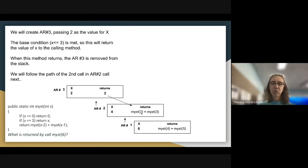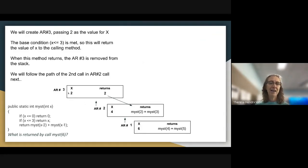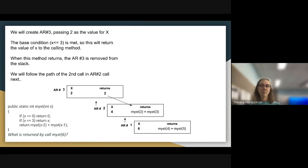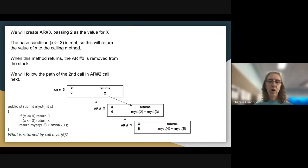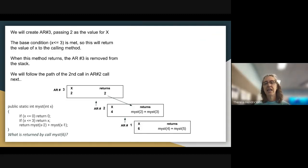When MIST(2) is called, it creates activation record 3, passing 2 as the value for X. The base condition X less than or equal to 2 is met, so this method returns the value of X to the calling method — returning 2, which Java places in the position of the MIST(2) call. Activation record 3 is then removed from the stack.